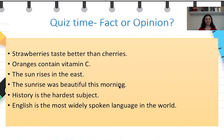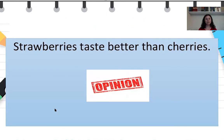So now let's do a quiz. We have six sentences here. I would like you to copy them in your notebook and decide whether they are facts or opinions. You can pause this video while writing. Okay, let's see how you did. 'Strawberries taste better than cherries' — of course, it's an opinion. Not everyone thinks that strawberries taste better than cherries.